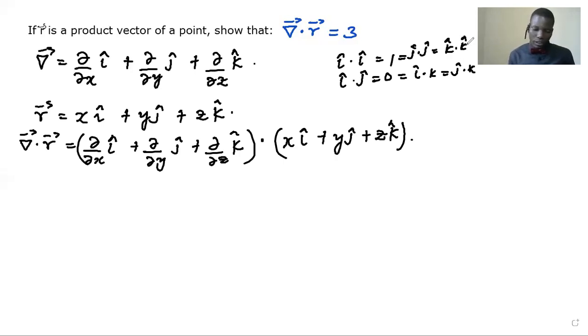So once we dot here, we are going to have that. Okay. So we dot this first part with that. i dot i is going to be one. So we are going to have partial x with respect to x.